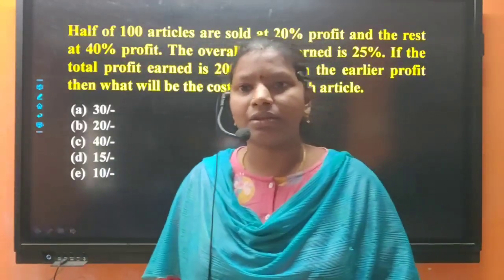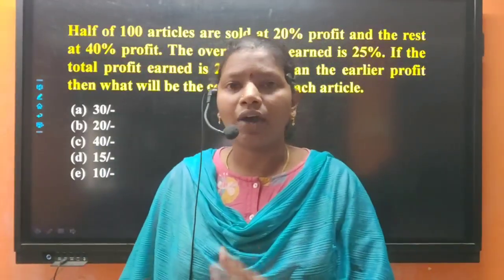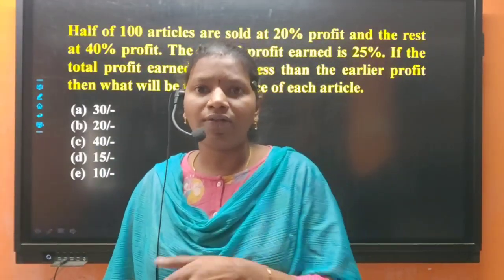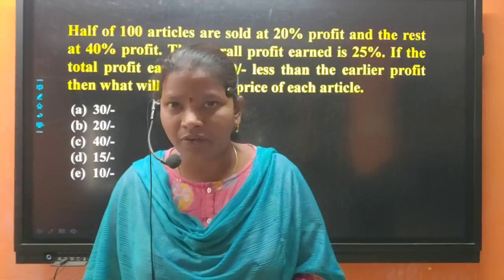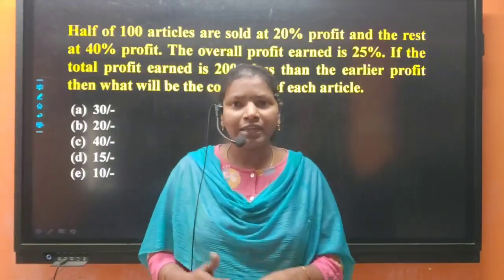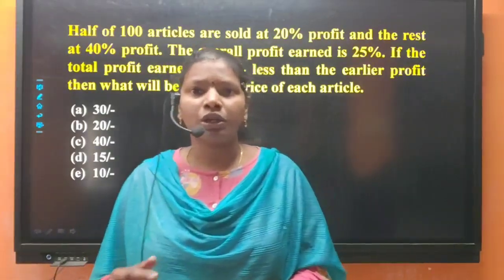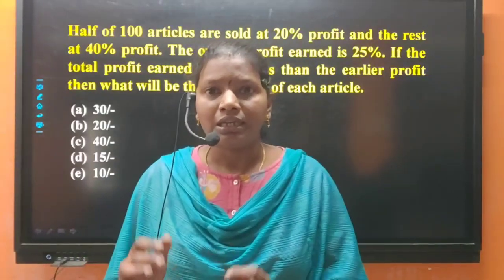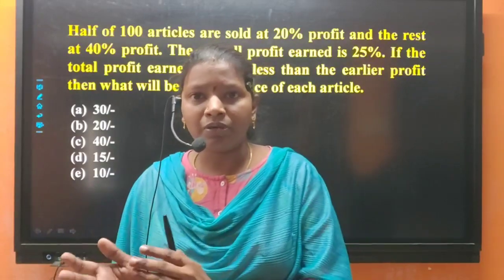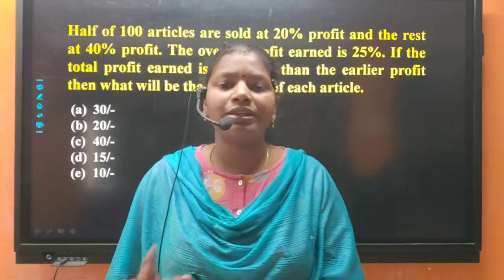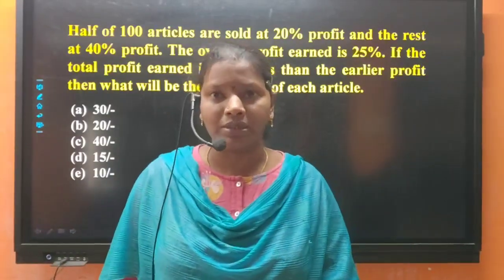So, if the total profit earned is 200 rupees, half at 20% profit and half at 40% profit is less than the other profit. If the total profit is 25%, the difference is 200 rupees.